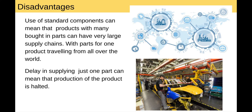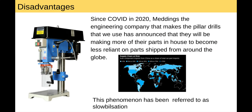Disadvantages. The use of standard components can mean that products with many bought-in parts can have very large supply chains, with parts from one product travelling all over the world. A delay in supplying just one part can mean that the production of the product is halted. Since COVID in 2020, the Meddings Engineering Company that makes the pillar drills we use in this room announced they will be making more of their parts in-house to be less reliant on parts shipped from around the globe. This phenomenon has been referred to as slowbilisation — the slowing of globalisation and becoming much more reliant on local parts.